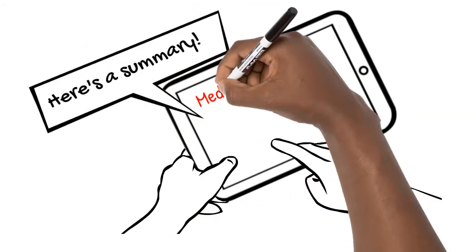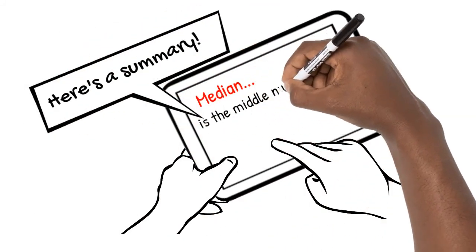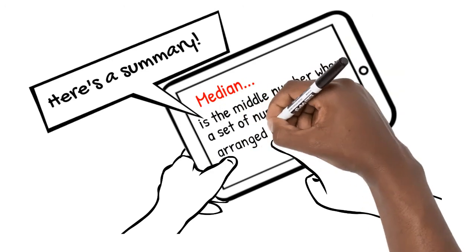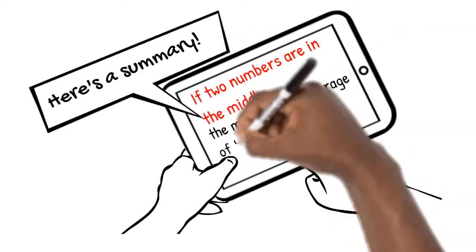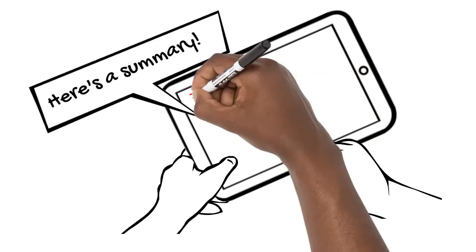Here's what we learned in this video. Median is the middle number when a set of numbers is arranged in order. If two numbers are in the middle, the median is the average of the two middle numbers.